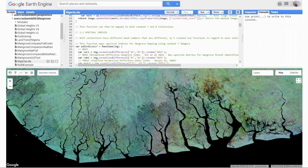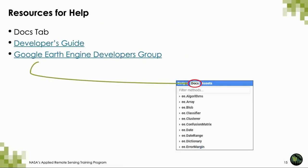If you're unfamiliar with what Google Earth Engine looks like, this is an example of the code editor we will be working in today. After we go through some more introduction, I'll be moving over to displaying my screen in Google Earth Engine. If at any point you're looking for extra help understanding some of the code, I highly recommend exploring the docs tab, the developer's guide on the Google Earth Engine website, and the Google Earth Engine developers group, which works like Stack Overflow where you can ask questions or explore questions other users have asked.